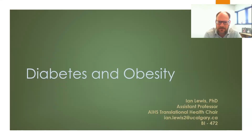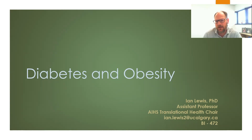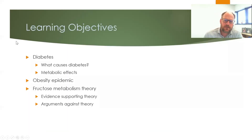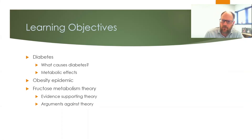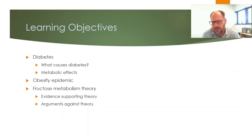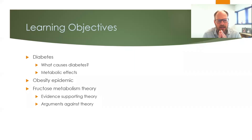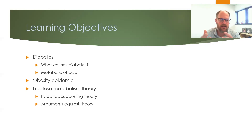Today we're going to be talking about diabetes and obesity and discussing the underlying biochemistry that can help contribute to these very common diseases. We'll cover what causes diabetes, the underlying biochemistry, the metabolic effects of the disease, how it's interrelated with obesity, and how this epidemic has been increasing over the last several decades. We'll also discuss at least one theory for how there's a tie-in between the metabolic pathways we've been discussing and the obesity epidemic.